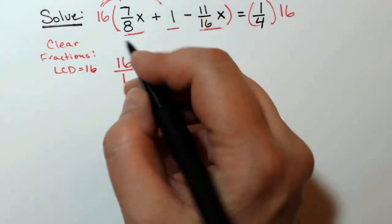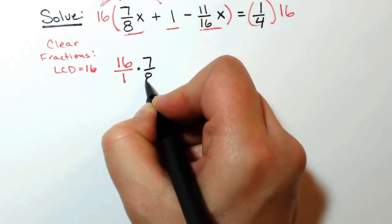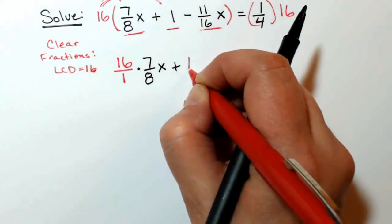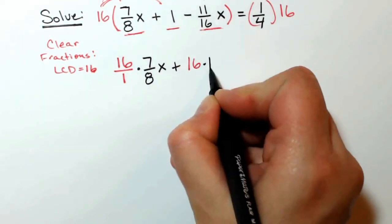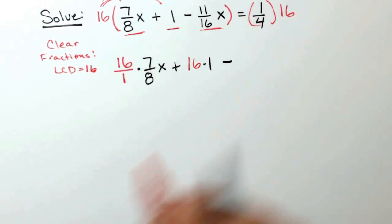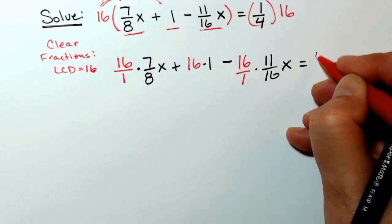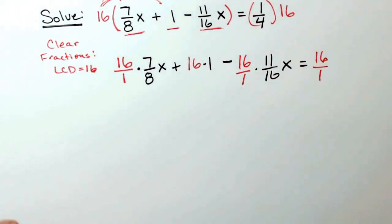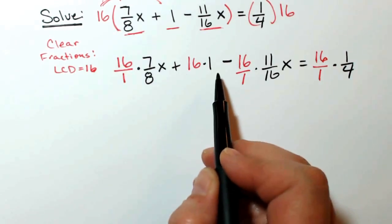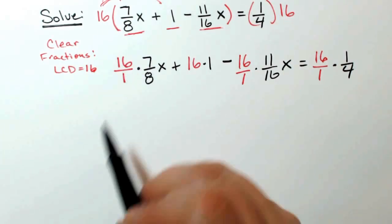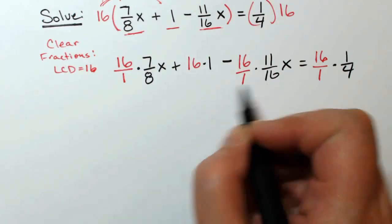So I can put the 16 over 1 so I can easily see what I will be canceling as I go ahead and multiply those. So I've distributed the 16, each term is multiplied by 16. Now I can do some cross-cancelling to eliminate the denominators.